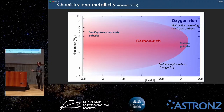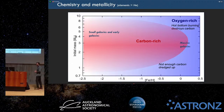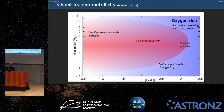Why do we care about this? These stars contribute a ton of material back to the universe. They are the dominant source of dust in the universe. That dust comes together to form planets, the sun, the solar system. So we want to understand the origin of the material that makes this up — you need to understand this very brief phase of evolution.